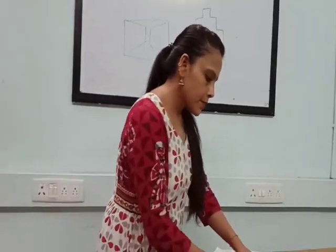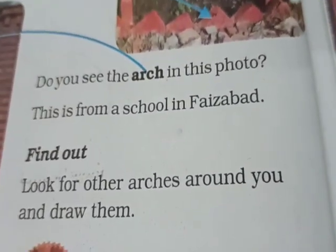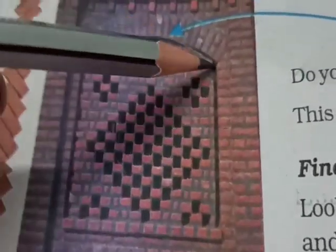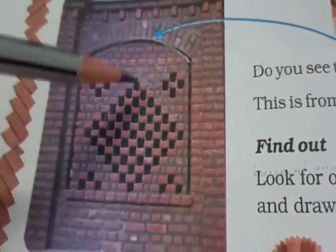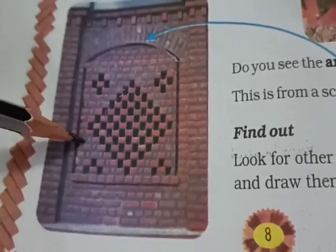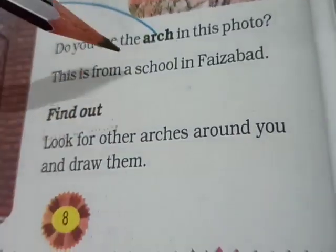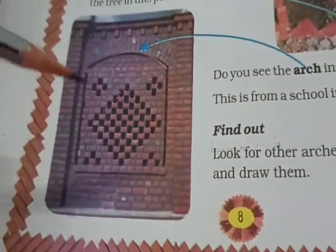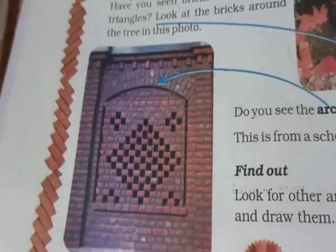This tree is covered around with a triangle brick pattern. Do you see the arc in this photo? This is called an arc — this example is from a school in Faizabad. Look for other arcs around you and draw them. Write down wherever you have seen this kind of arc — around your house or other places you have visited.